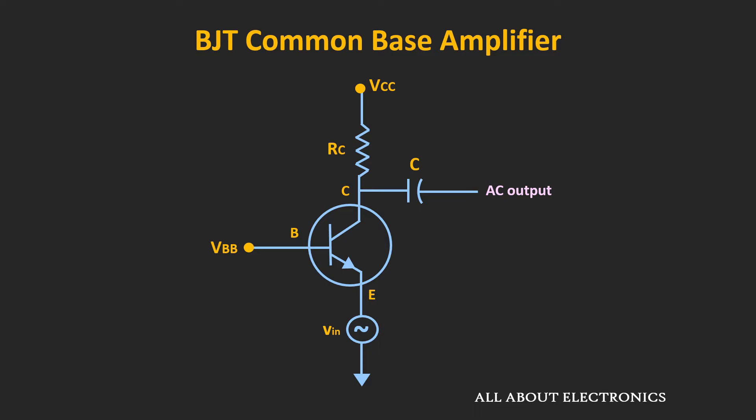For now, let's assume that some DC biasing voltage is already applied at the base terminal. For the AC signals, these DC voltage sources will act as zero. That means the base terminal will act as an AC ground. So the input signal is applied between the emitter and the ground terminal — or effectively between the emitter and the base terminal. Similarly, the output is measured between the collector and the ground terminal, or effectively between the collector and the base terminal. That means in this configuration, the base terminal is common between the input and the output side, and that is why this amplifier configuration is known as the Common Base Amplifier.